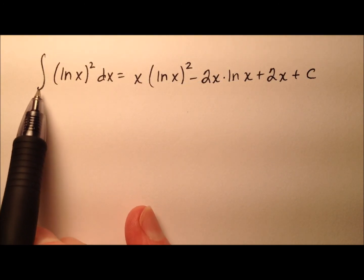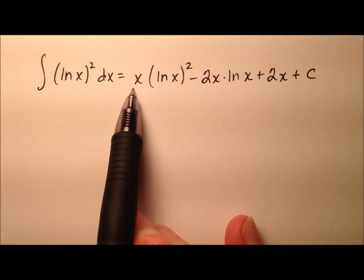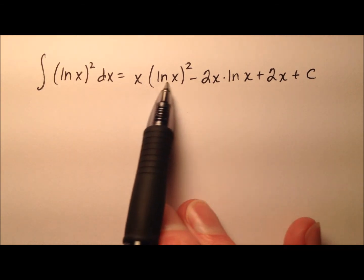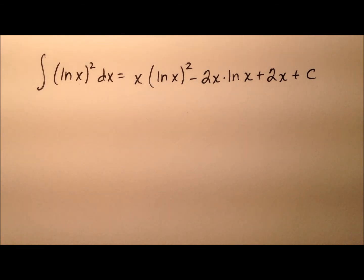So we just worked out that the integral for the square of the natural log of x with respect to x is this expression right here. So let's go ahead and take the derivative of this and just verify that we do indeed get the square for the natural log of x.